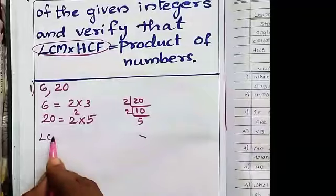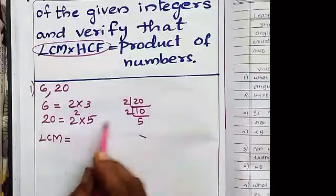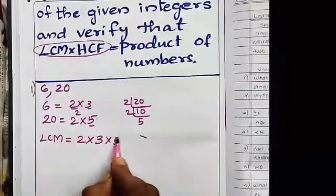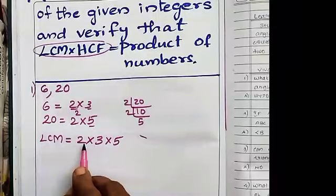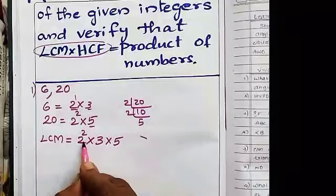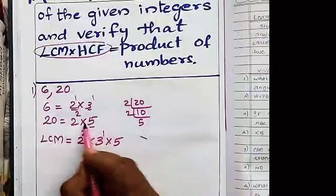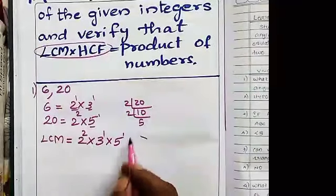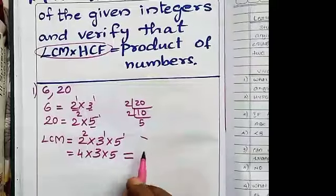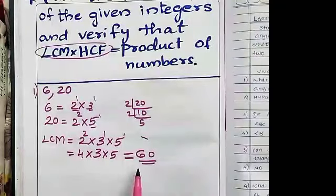Finding the LCM: select all the different prime factors, which are 2, 3, and 5. Then select the highest powers. For 2, the highest power is 2 squared. For 3, it is 3 to the 1. For 5, it is 5 to the 1. So LCM equals 2 squared into 3 into 5, which is 4 into 3 into 5. That is 4 into 5 equals 20, and 20 into 3 equals 60. So the LCM of 6 and 20 is 60.